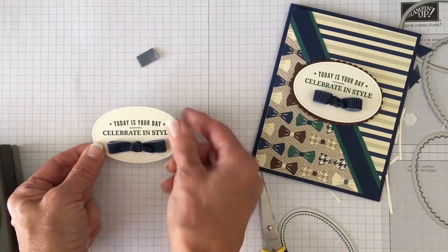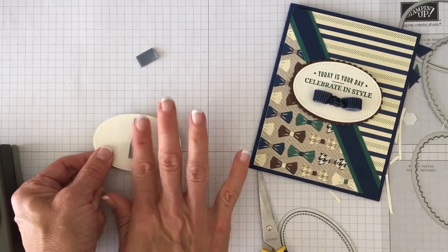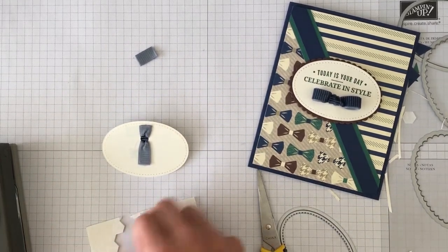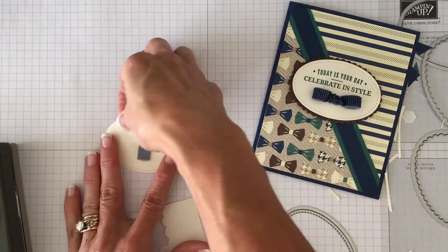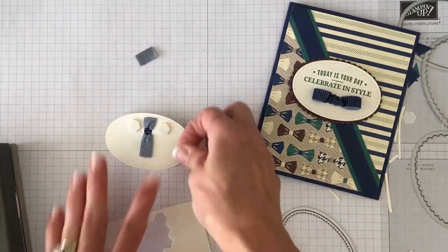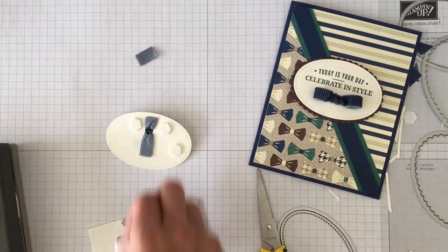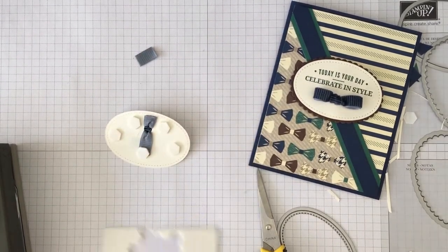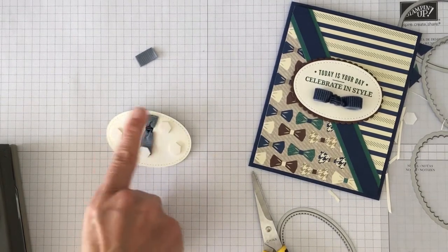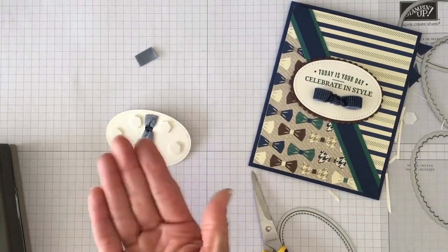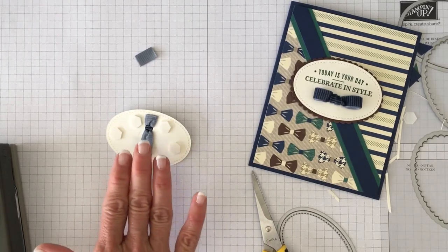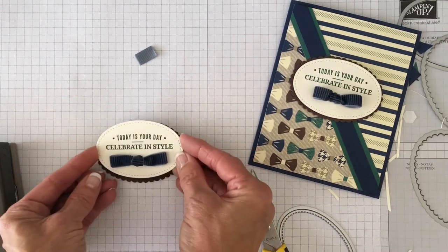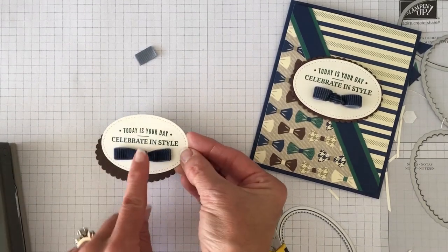Now, because this bow has a little bit of dimension on the back of it, it's a little lumpy. What I did is I then put dimensionals on the side of the bow. Sometimes I'm very generous with my dimensionals and sometimes I'm a little stingy. But I put the dimensionals around the bow because then the dimensionals give you enough room that the puffiness of the bow is not going to be wrinkled on the front of your card.